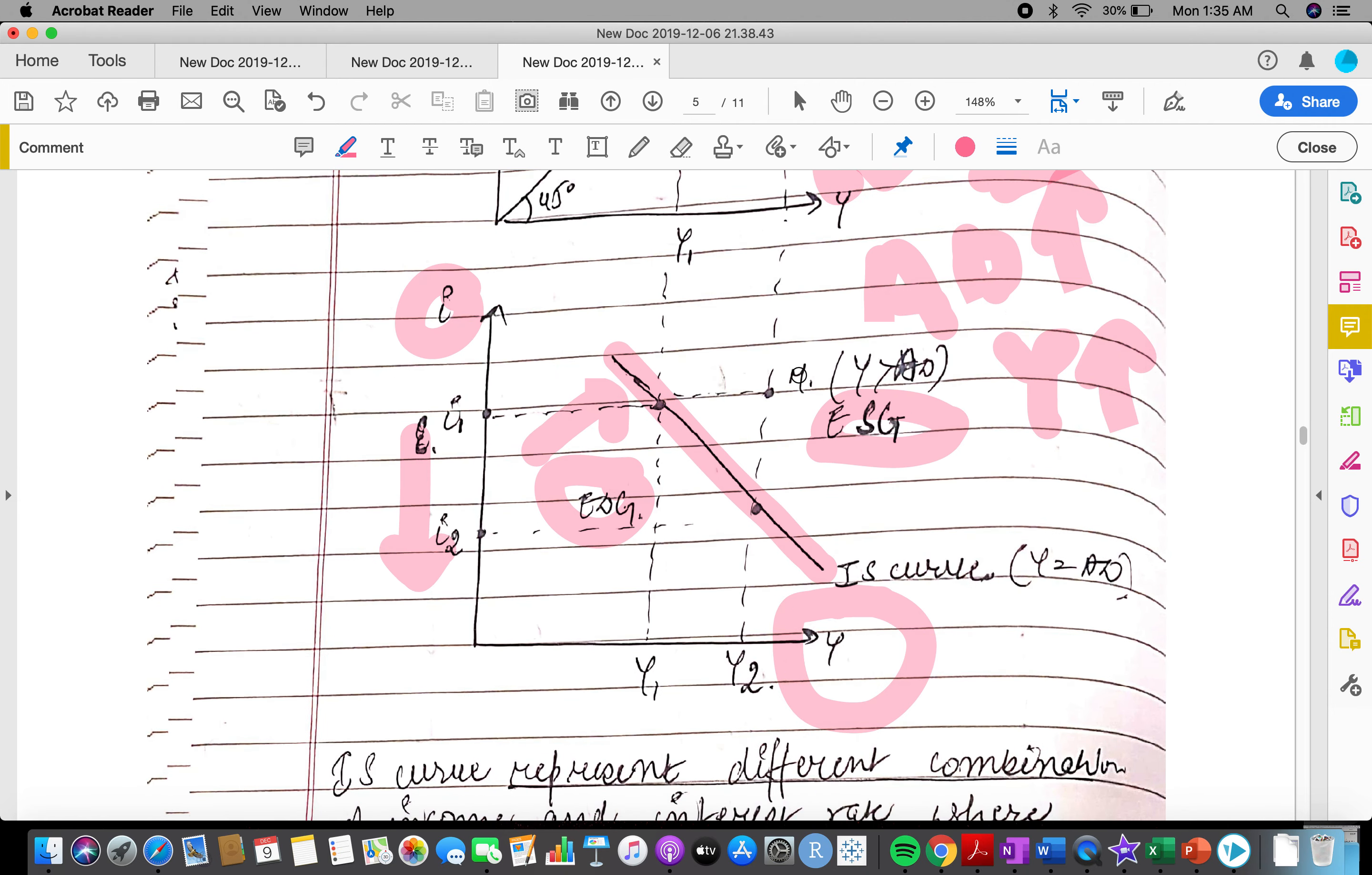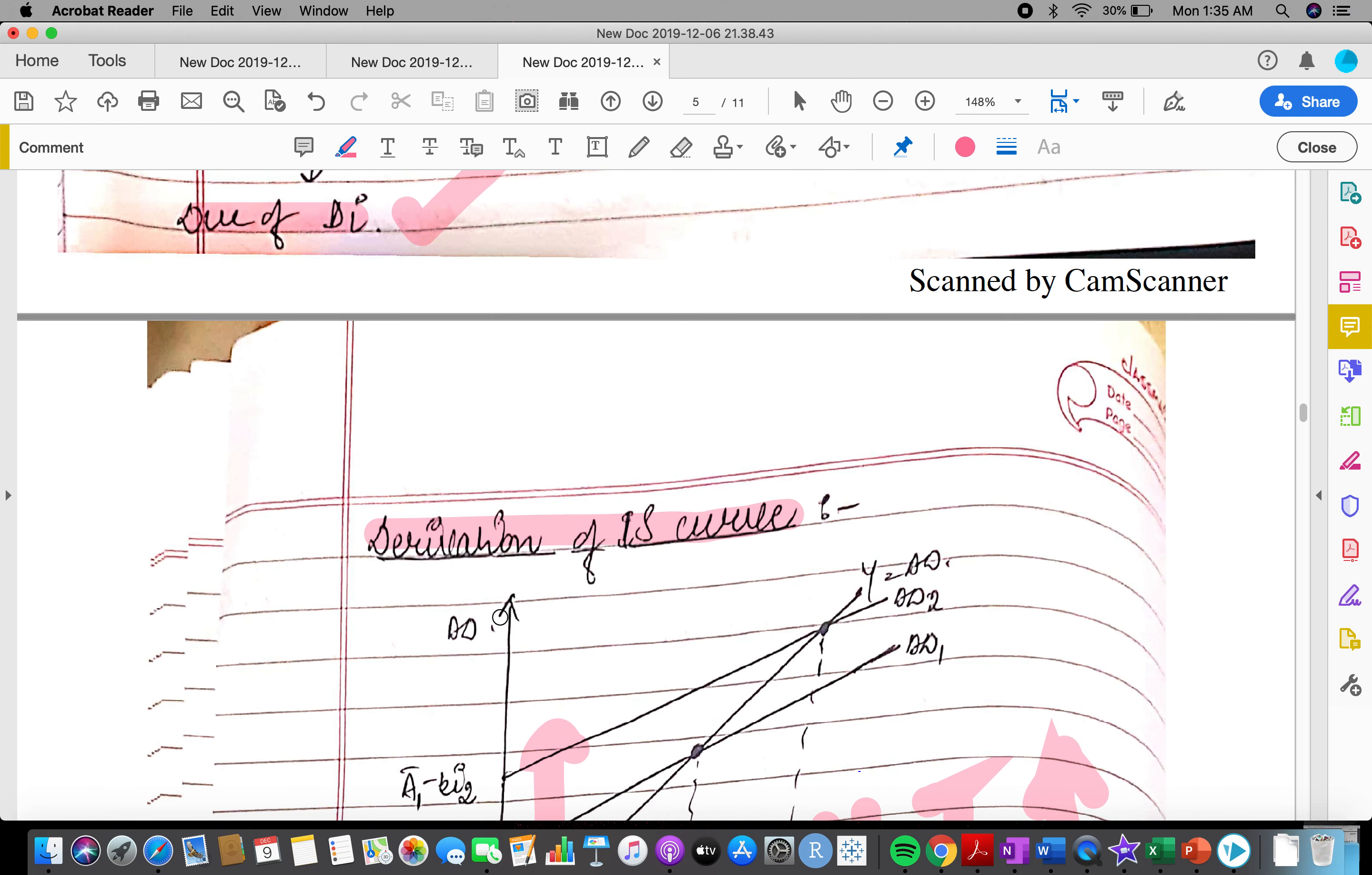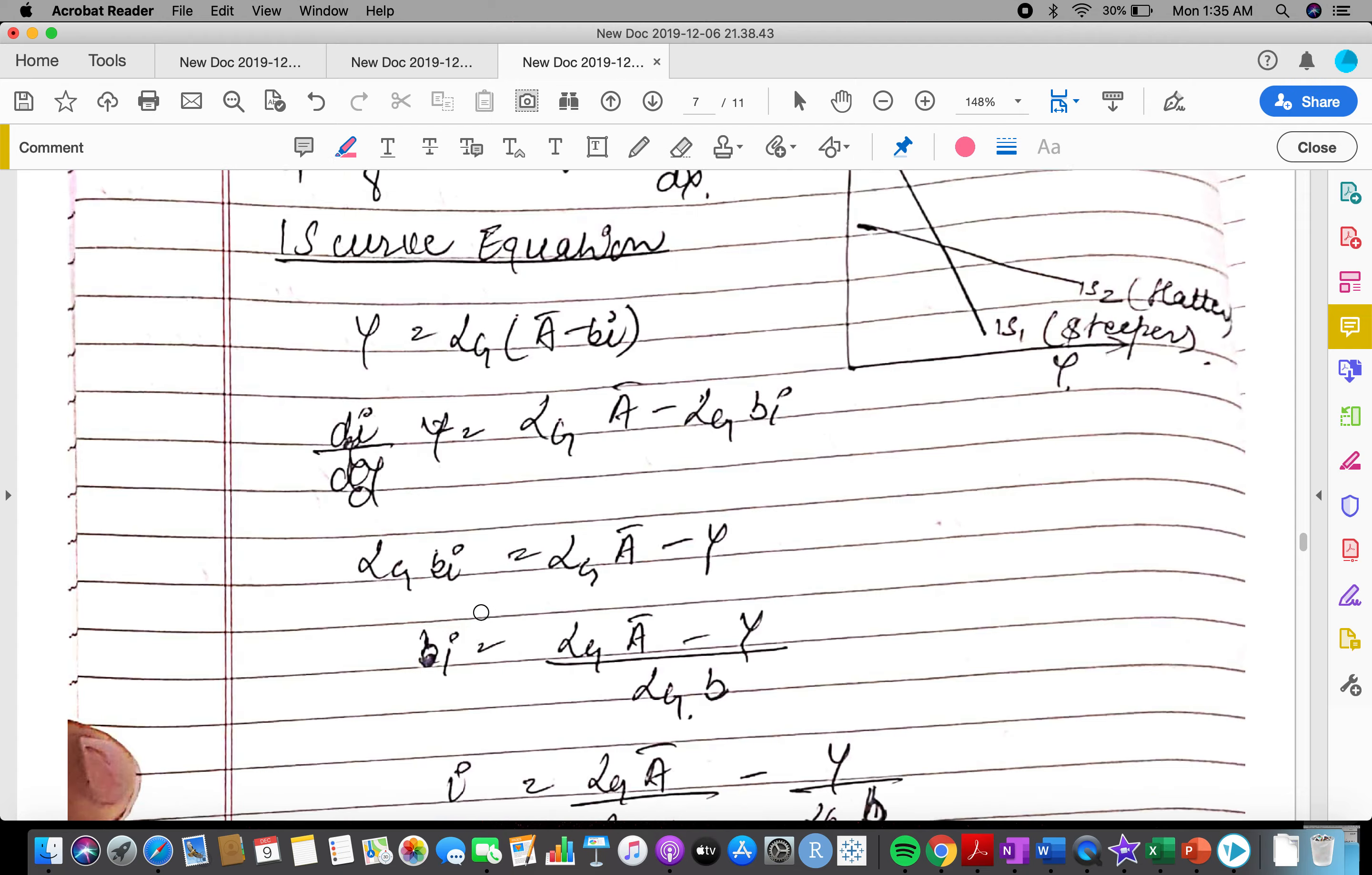In order to achieve equilibrium in goods market, if the economy is towards the Y is greater than AD situation, stock has to be reduced. And if it's to the left side of IS curve, stock has to be increased so that equilibrium can be attained.